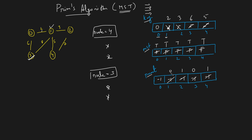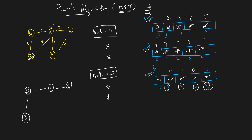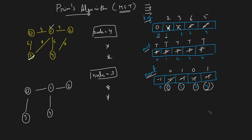Now the parent array is ready. To extract MST edges, iterate from index 1 to 4 (not from 0, since node 0 is the starting node and has no parent). Node 1 has parent 0 → edge (0,1). Node 2 has parent 1 → edge (1,2). Node 3 has parent 0 → edge (0,3). Node 4 has parent 1 → edge (1,4). These four edges form your minimum spanning tree.